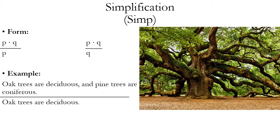Here's an example in natural language: Oak trees are deciduous and pine trees are coniferous. Therefore, oak trees are deciduous. You can just take either conjunct — the first or the second — and derive it from that conjunction using simplification. Intuitively, this rule makes sense because if we know a conjunction is true, we know each of the conjuncts is true individually as well.